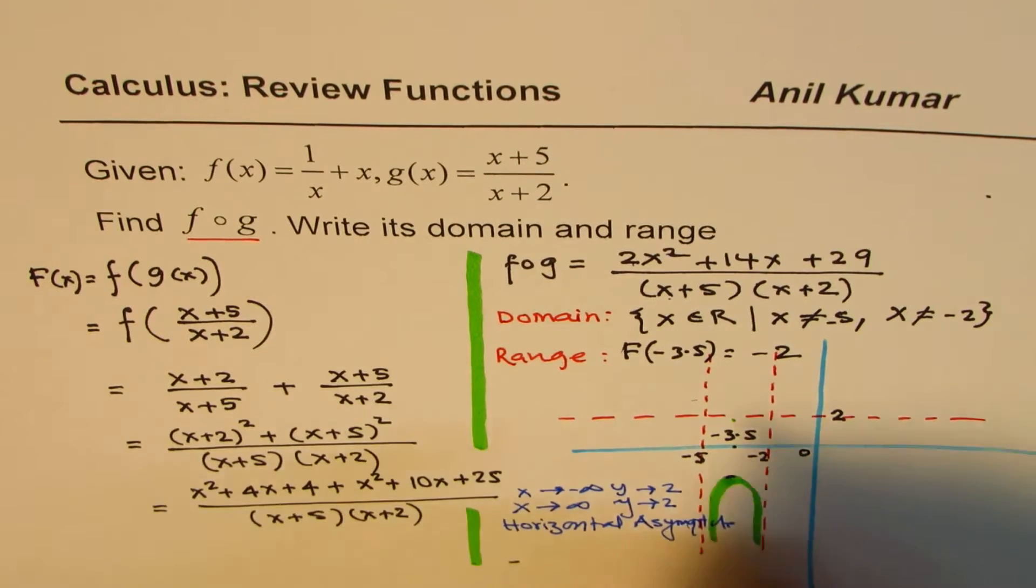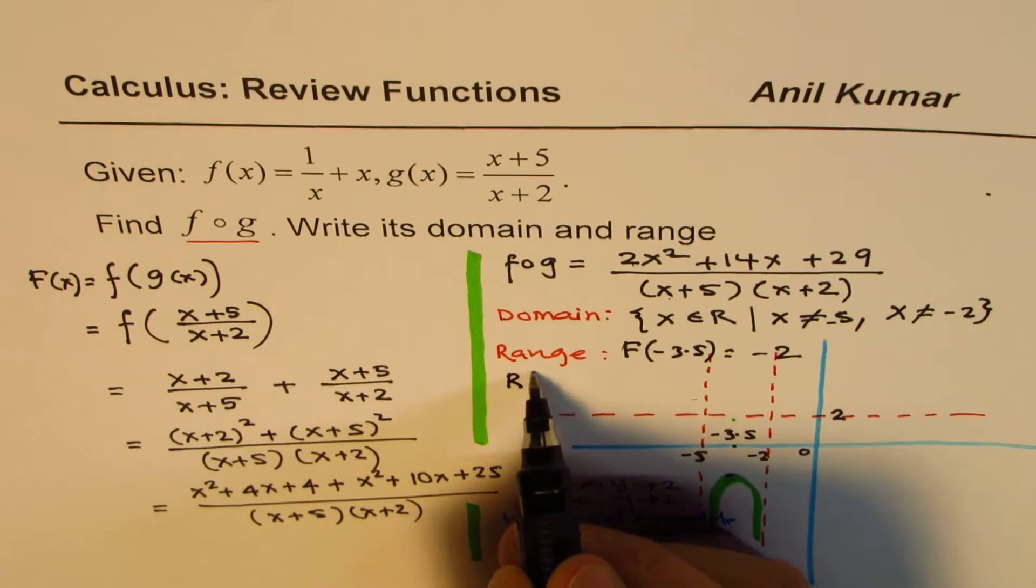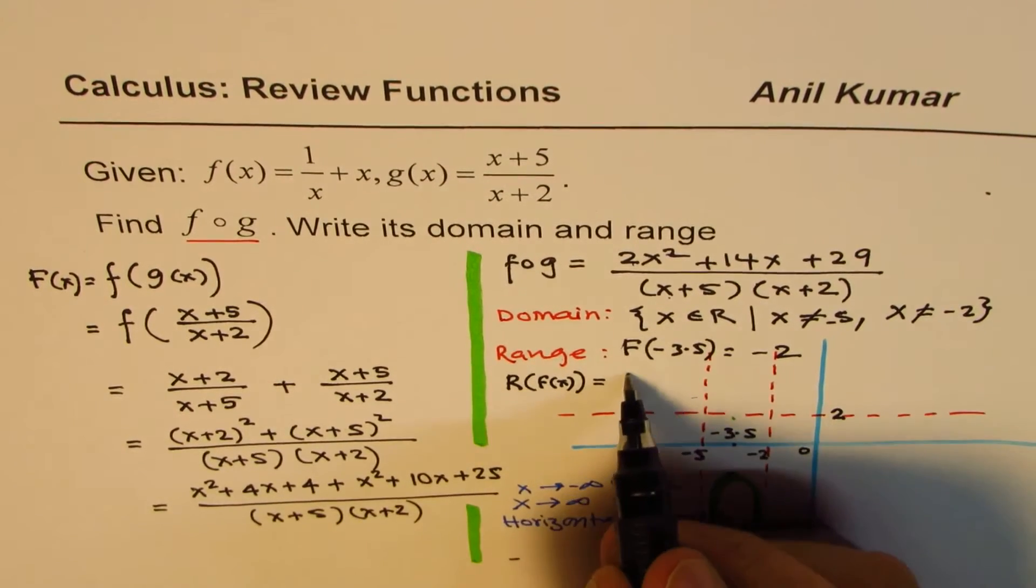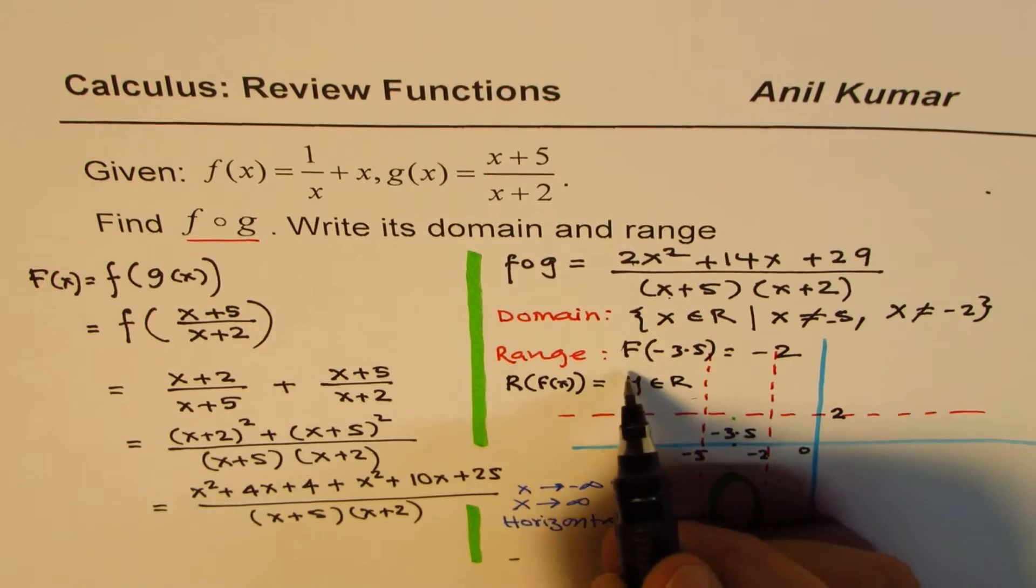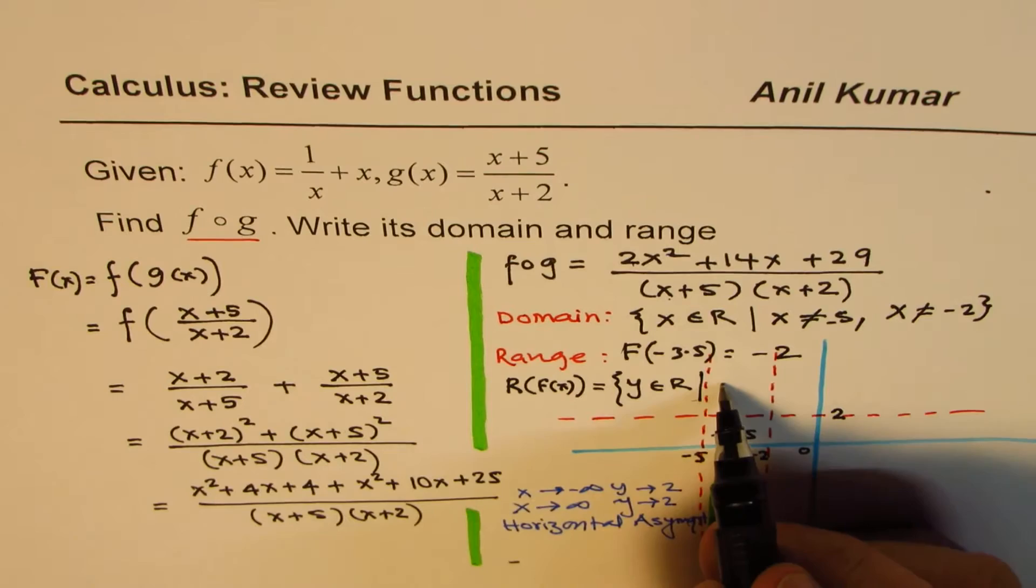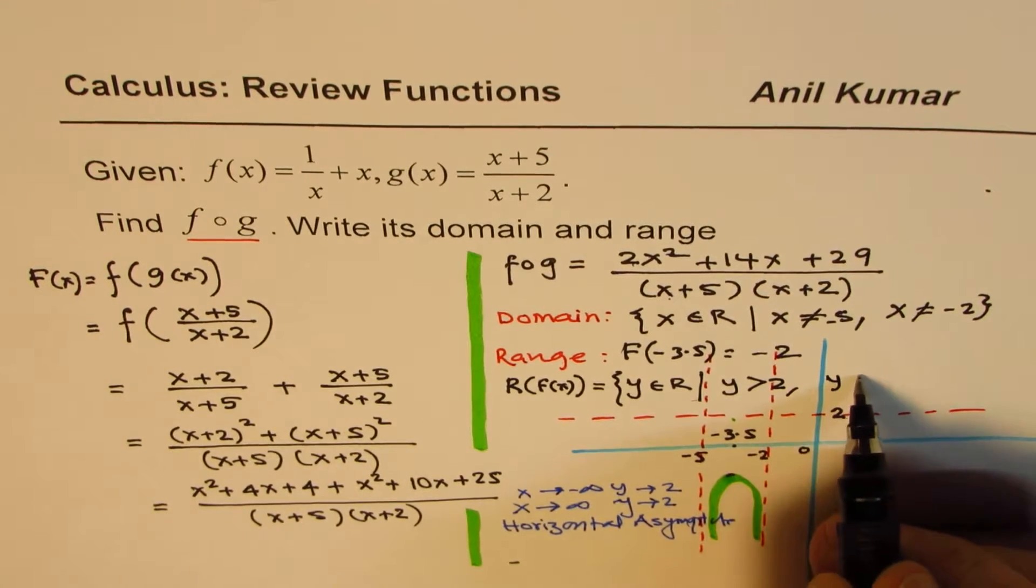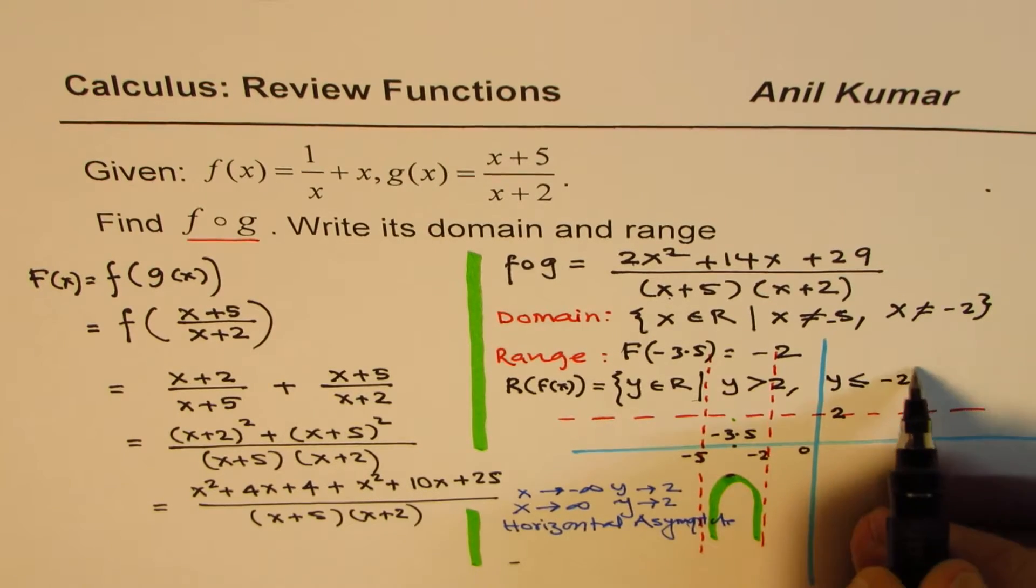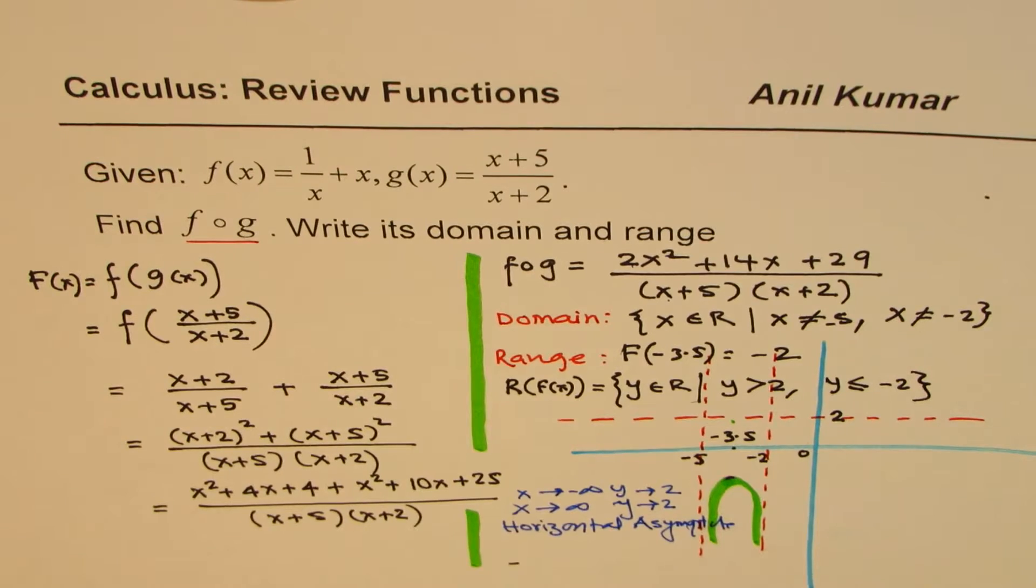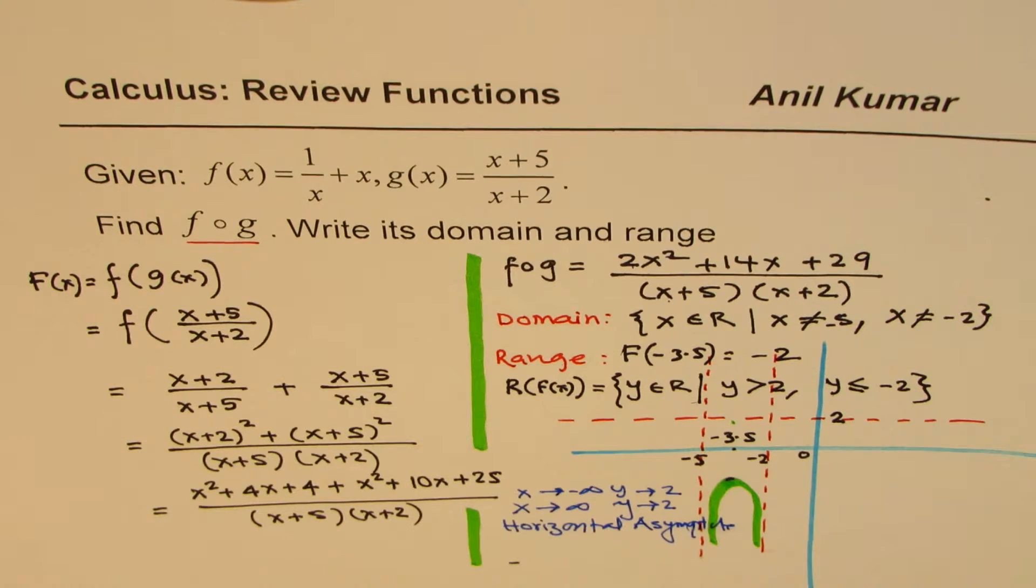So from here, we can actually write that the range of the function, let me write range of f of x is equal to y belongs to real numbers, all real numbers where y is greater than the asymptote 2 and y is less than equal to minus 2 in this case. Our calculation showed it. So that is how you could get range of this function.